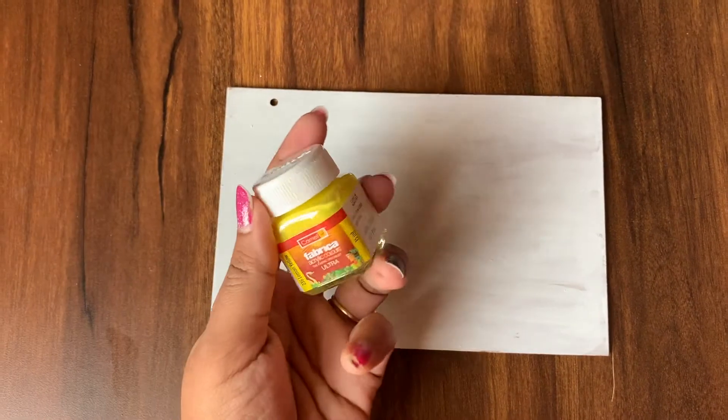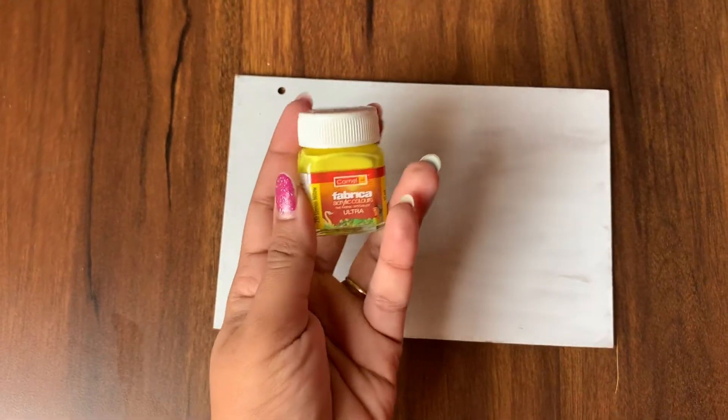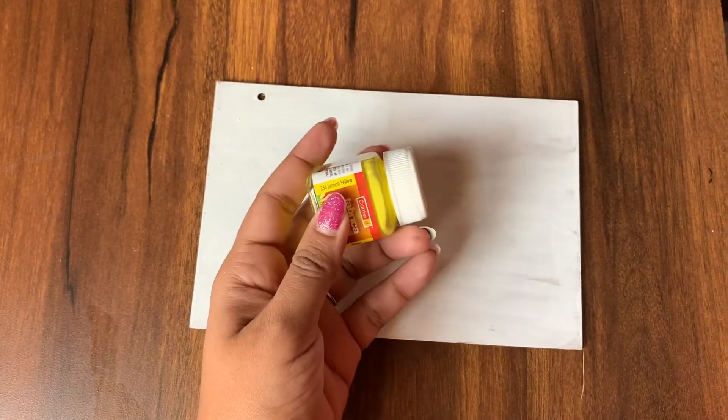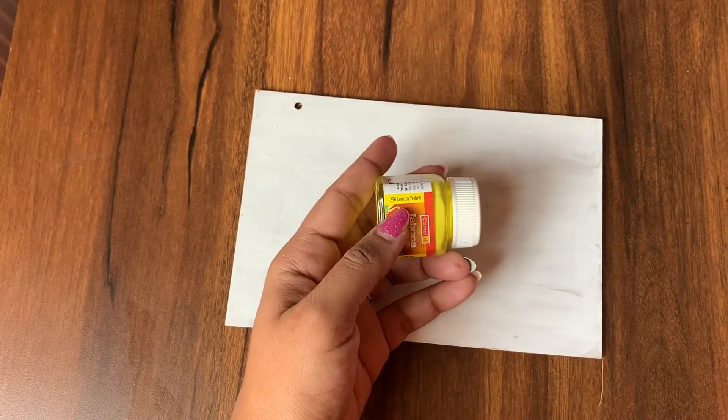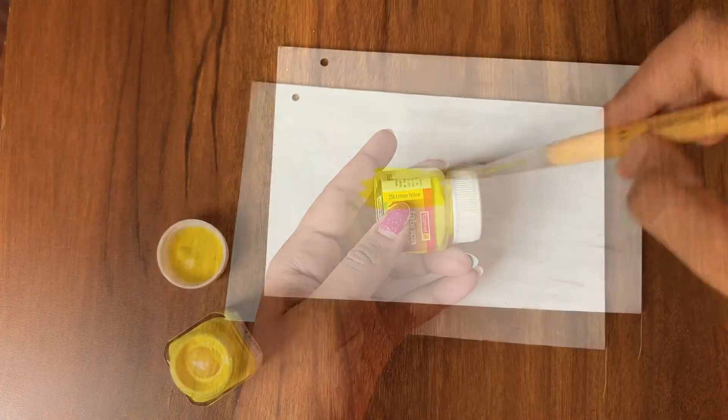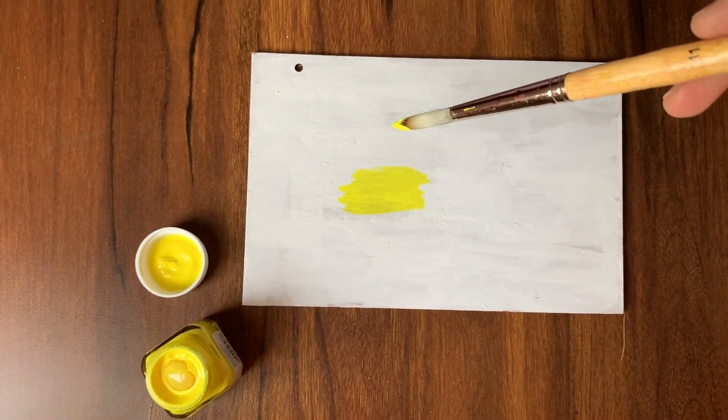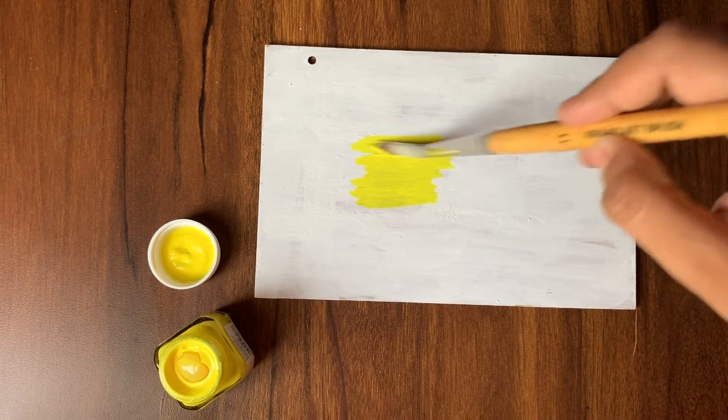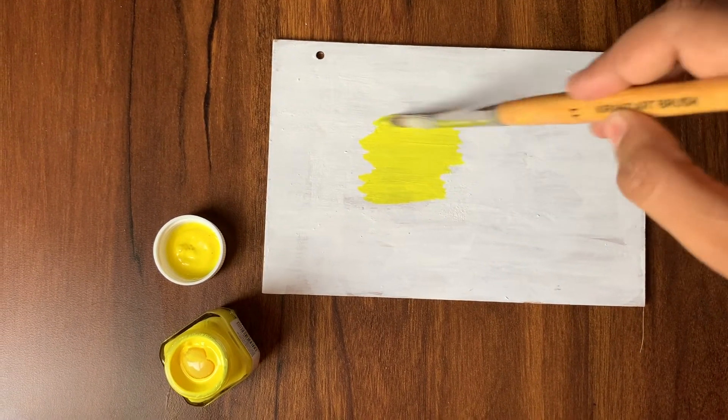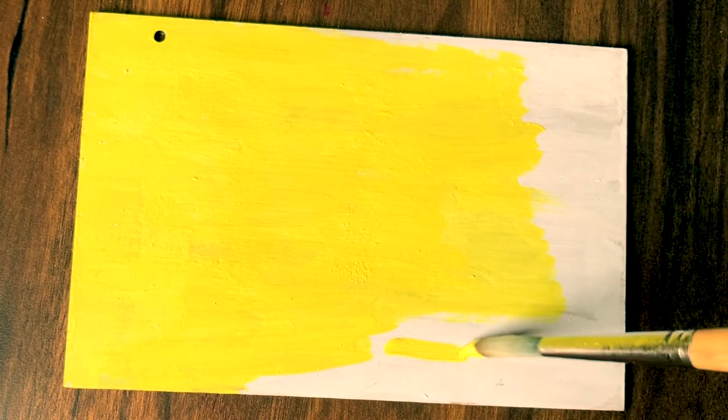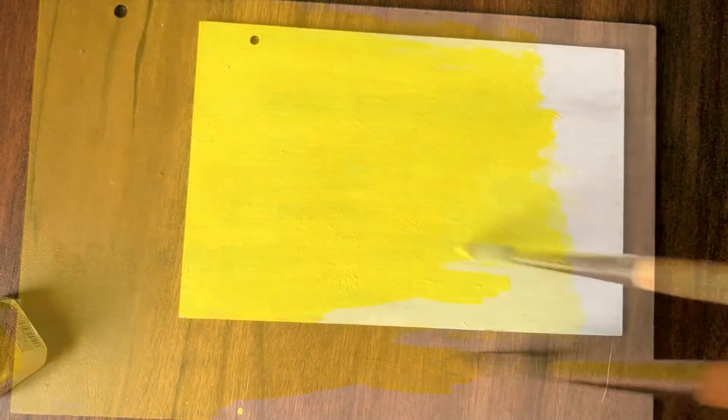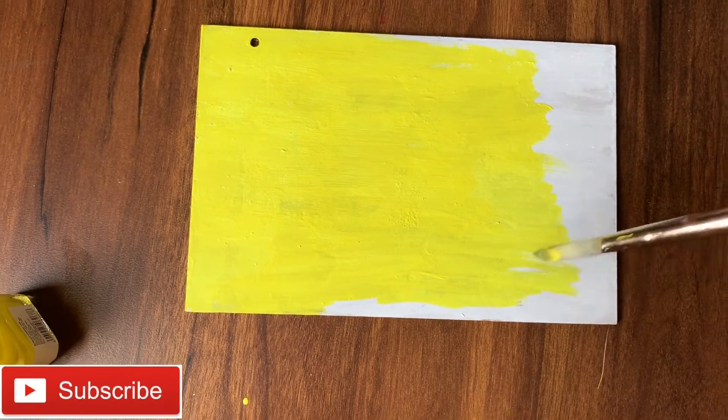Give good two coats of white primer and this is how it looks. Next I'm going to use yellow color and I'm going to paint it. So I'm going to use shade number 236 which is a lemon yellow shade.